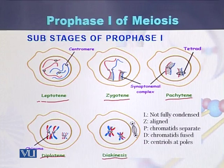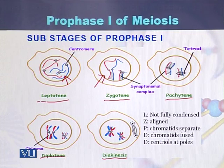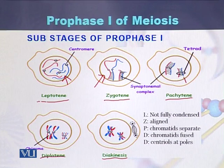In Leptotene, the chromosomes are not fully condensed, as we can see. In Zygotene, the chromosomes are condensed and aligned with each other. In Pachytene, the chromatids of the chromosome separate from each other.